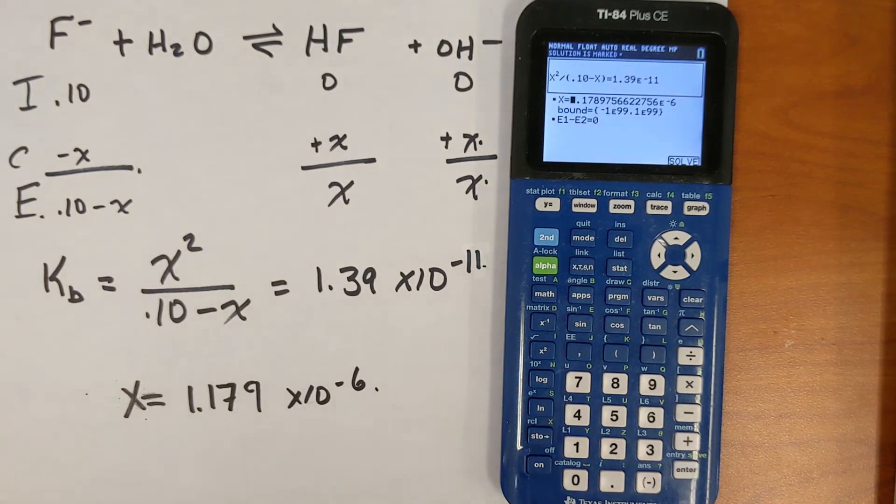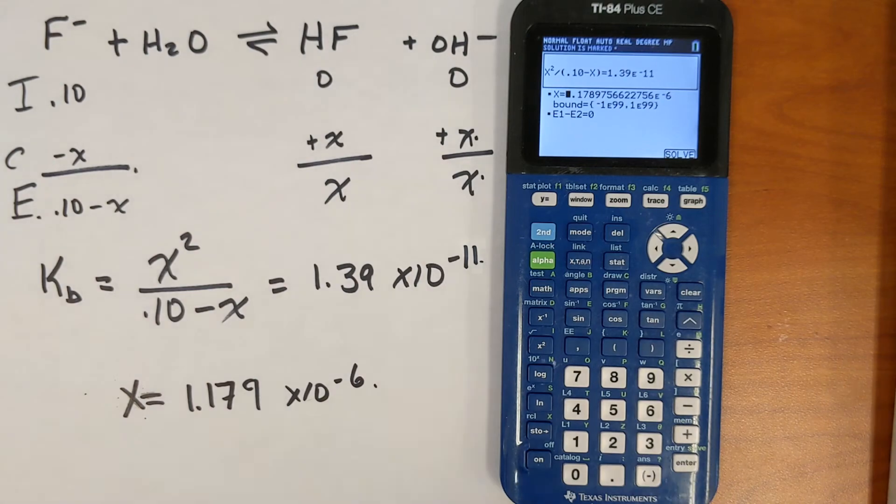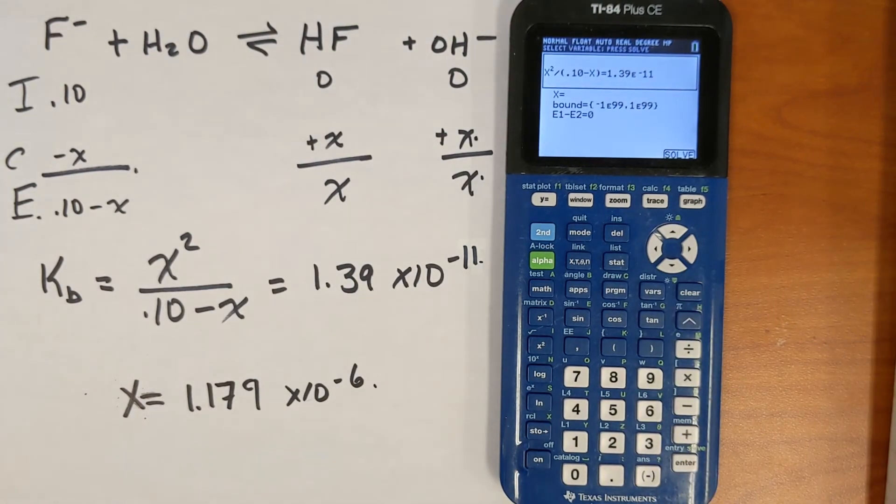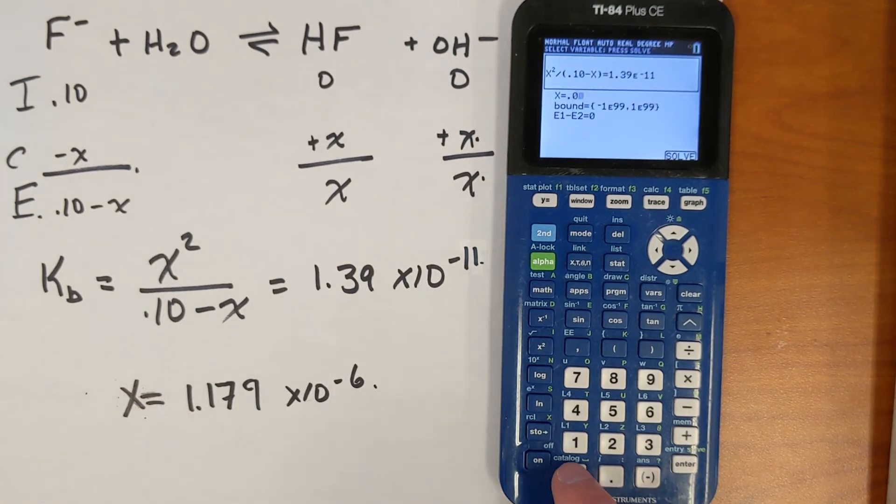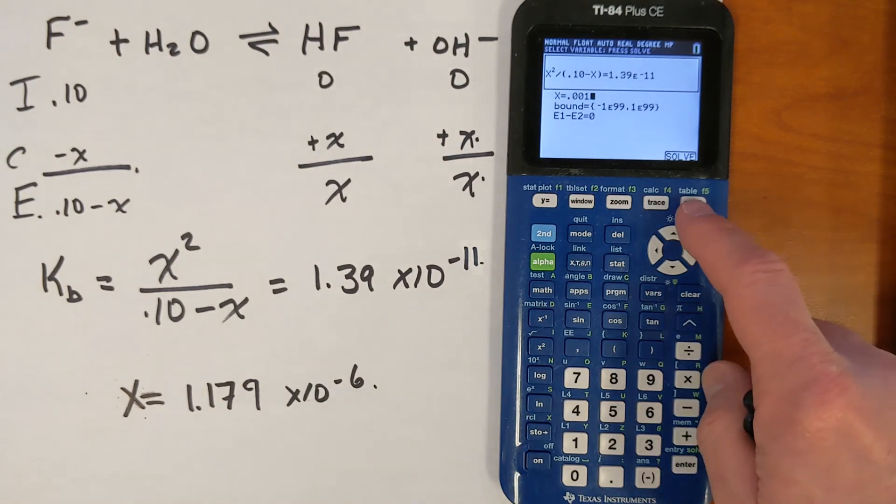Let's just, I want to emphasize that you do not need to belabor the guessing of this number here. Okay, so I'm going to clear this number out, and I'm going to just press in 0.001. Okay, that's nowhere near the square root of 1.39 times 10 to the minus 11th. But I'm just going to guess this, and I'm going to press solve.